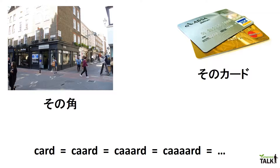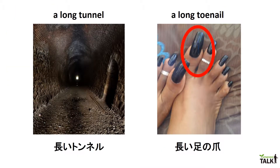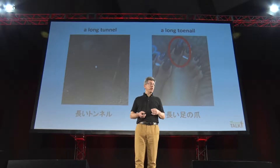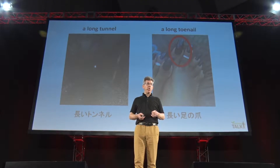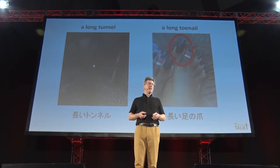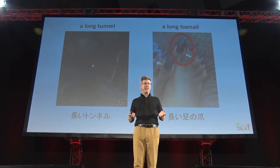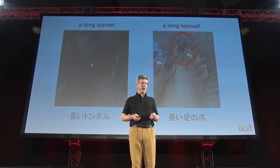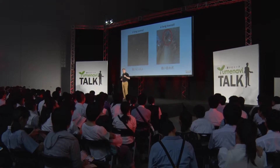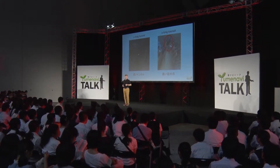In English, 'card', 'card', and 'card' are all the same word. Here's another example: a long tunnel versus a long toenail. The vowel sound in 'tunnel' is more like 'A' than it is 'O'. So when a Japanese person says 'tonneru', I always think of 'toenail', not 'tunnel'. With computers, we can easily see the difference between these two.